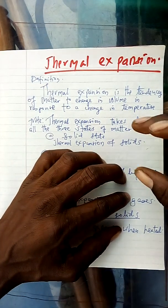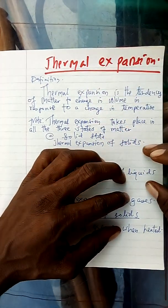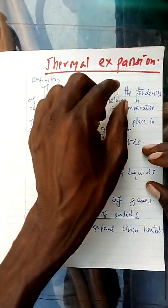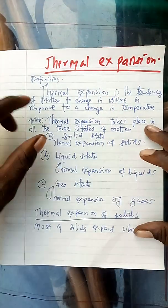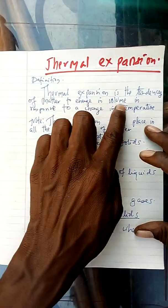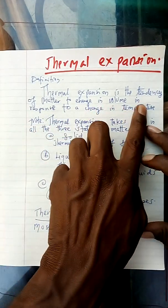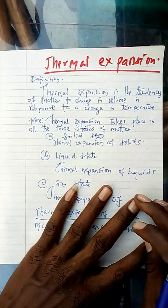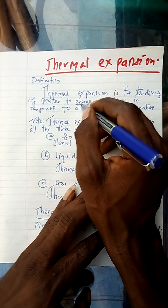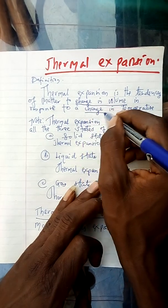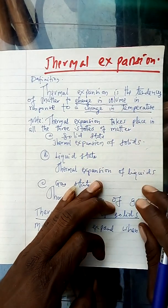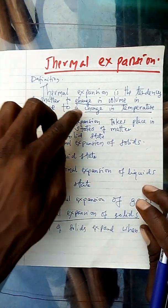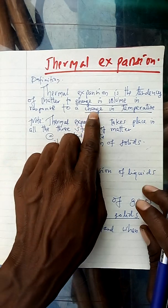We are talking about the increase in volume due to the change in temperature. There is a cause of increase in volume, and that cause is what we are discussing here. Therefore, by definition, thermal expansion is the tendency of matter to change in volume in response to a change in temperature. We have to discuss the change in volume and change in temperature. In absence of a change in temperature, there is no change in volume.